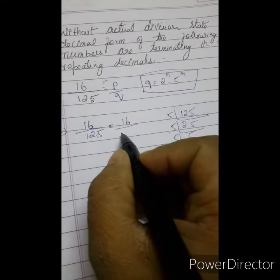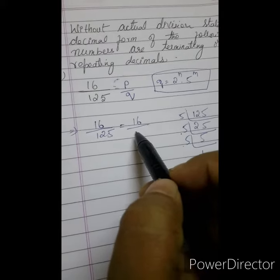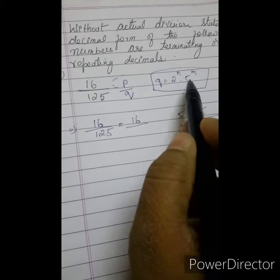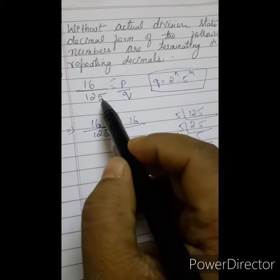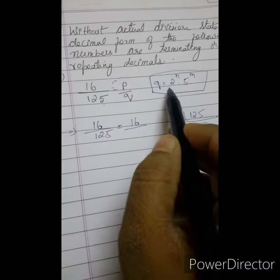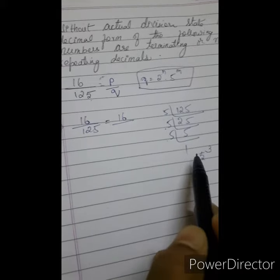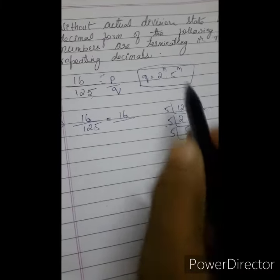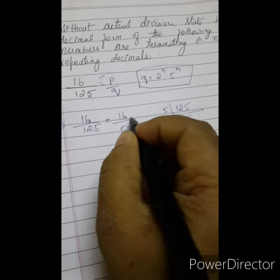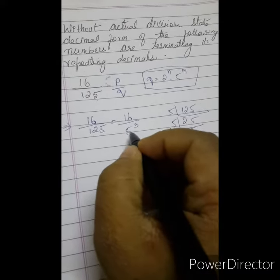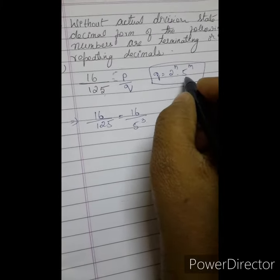Fine, so I am writing here. See, according to our formula, Q should take the place of 2 power n into 5 power m. You can write the Q value, that is denominator, in this formula. So this is 2 power n into 5 power m. 2 doesn't appear in the prime factorization, but 5 has come. So 5 power 3. So you don't have 2 in the value. 16 by 5 power 3. So this Q is in the form of 2 power n into 5 power m.